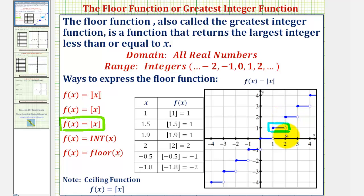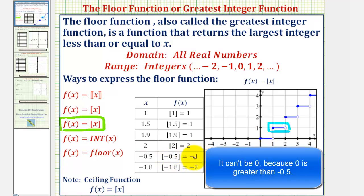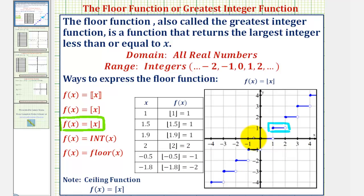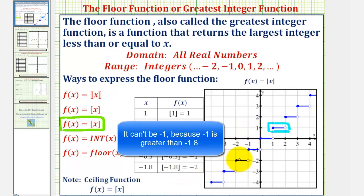The floor function contains the point two comma two. Now let's look at two negative values, which can be a bit confusing. When x is negative zero point five, we're asking what is the largest integer less than or equal to negative zero point five — that would be negative one. For x equal to negative one point eight, the largest integer less than or equal to negative one point eight would be negative two.